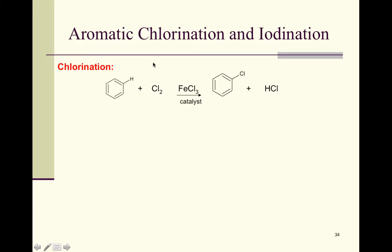Chlorination: the mechanism is the same as the bromine mechanism. In chlorination, a hydrogen is substituted with a chlorine. Cl2 and FeCl3 are used as the catalyst, and a minor secondary product of HCl is formed in this monosubstitution.